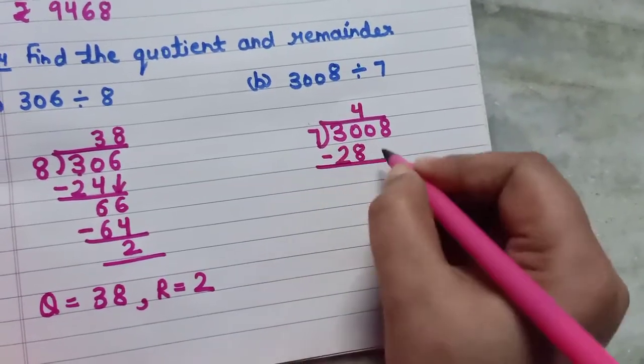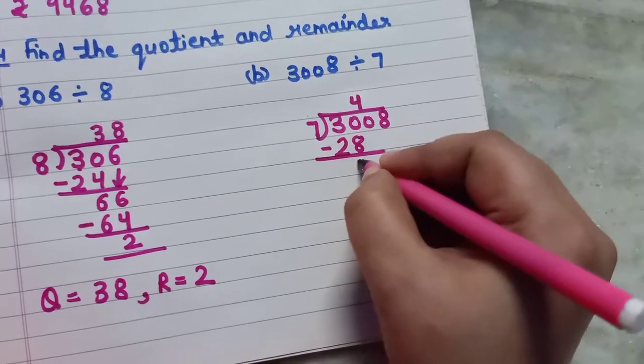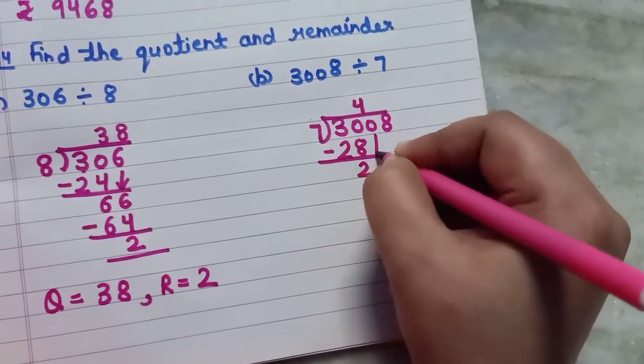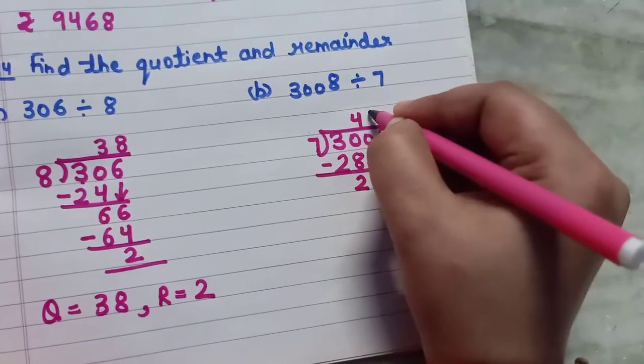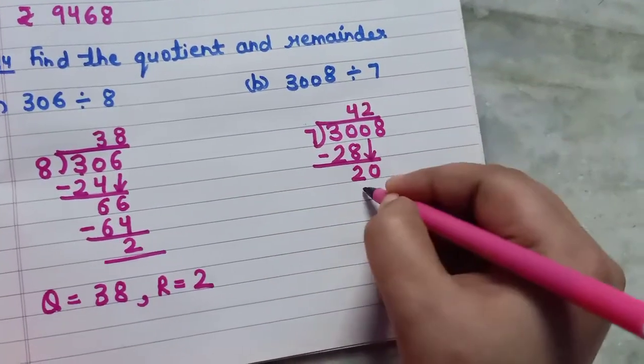Now subtract 30 minus 28. What you will get? 2 over here. Now copy down 0. Again check. 7 twos are 14.